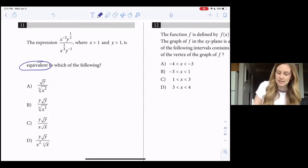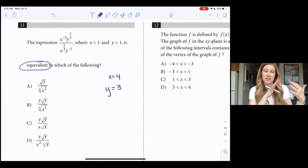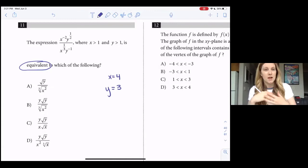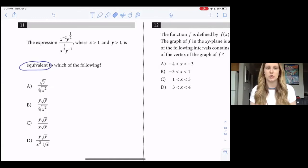Now if this were the calculator section we could plug in. Say if x equals four and y equals three, put those values into the original equation and then also put them into the answer choices. That would be a really great way to do this question. But since we don't have our calculator, we need to know the exponent rules anyways, and plugging in might actually just add another layer of difficulty. So we're not going to use that strategy for this question. We're just going to apply the exponent rules.